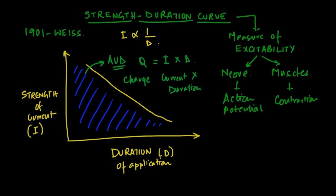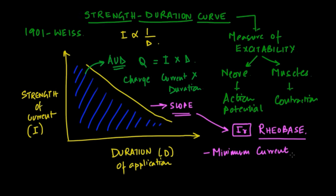The slope of this particular graph is quite important and helps estimate the rheobase. Rheobase comes from Greek words meaning minimum current, and is the minimum current of infinite duration required to stimulate any particular tissue, whether nerve or muscle.